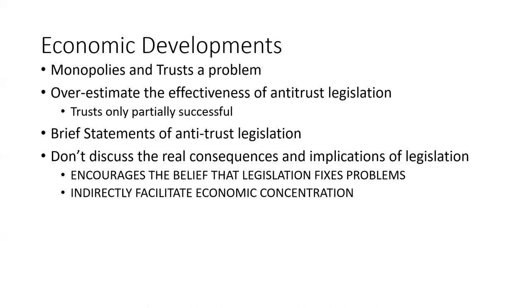All the books saw monopolies and trusts as a problem, but Anion says the way responses to the problem were discussed actually disguises and rationalizes economic concentration. Most books painted Teddy Roosevelt and Woodrow Wilson's trust-busting efforts favorably and praised the progressive era as a period of social reform and progress. However, the laws were only partially successful. The authors didn't discuss the actual results of legislation, and the tone showed corporations continued to concentrate their economic power. Anion argues the textbooks sent the message that economic concentration was going to happen anyway, and that you can't really regulate industry — teaching students that government isn't effective.